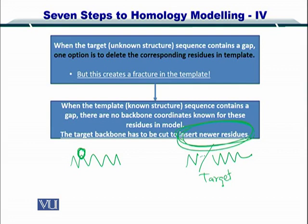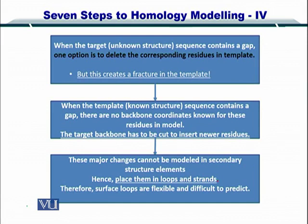So how do you insert the new residues, and which residues are to be inserted? Because cutting the target will mean insertion of newer amino acids at that position, and the activity of the protein can change, the new residues that you add can only go into the loops and strands. Please remember this very important point: those residues that are inserted into the target in order to fill the gaps typically go to the loops. Because the loops are flexible both in length and in structure, you can select from multiple possibilities and choose the loop structure that is most suitable.